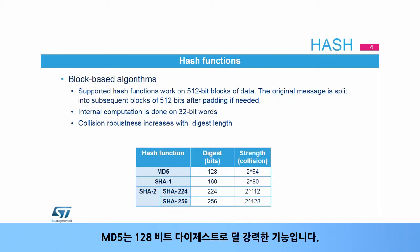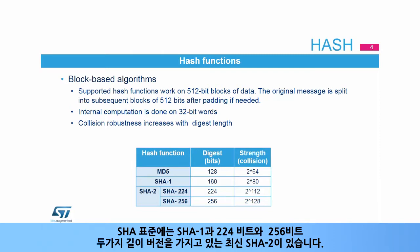MD5 is the less robust version with only a 128 bit digest. The SHA standard has two versions: SHA-1 and the more recent SHA-2 with its 224 and 256 bit digest length versions.